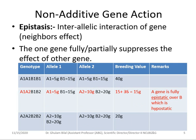The next case of non-additive gene action is epistasis, which is inter-allelic interaction of genes. I call it the 'neighbor effect' — just as a person living next door may have an effect on you, neighboring genes have an effect on each other. This effect is called epistasis: inter-allelic interaction of genes.